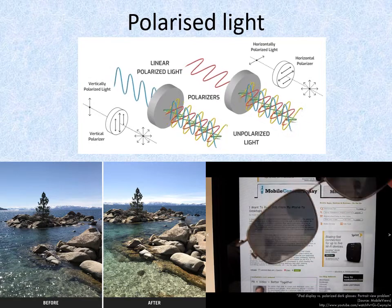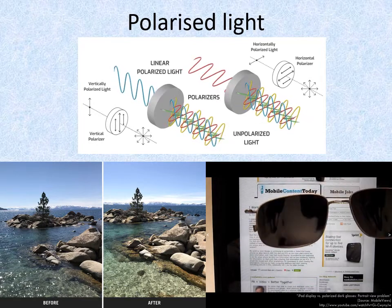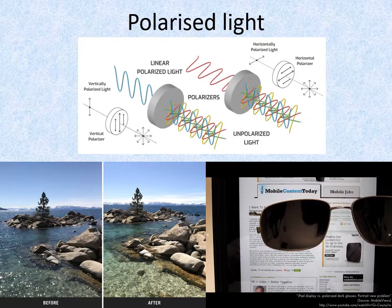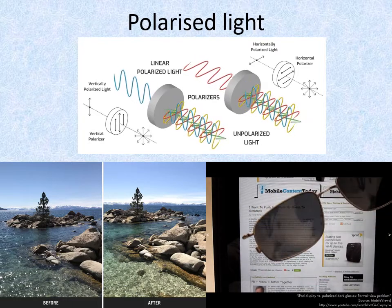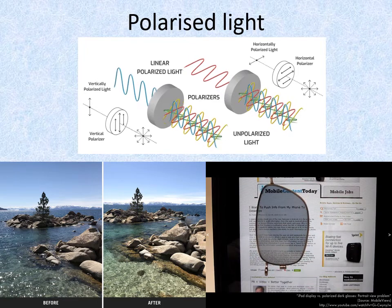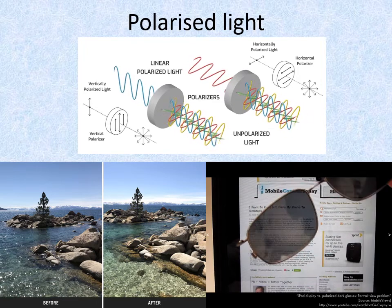This is the principle behind polaroid sunglasses and polarising filters in cameras. On the left we see how a polarising filter on the camera eliminates much of the glare of the water surface and allows us to see into the water more clearly.